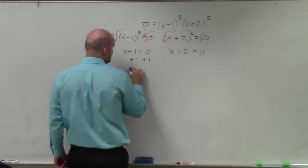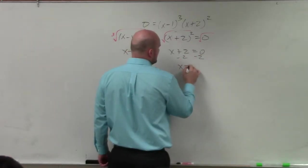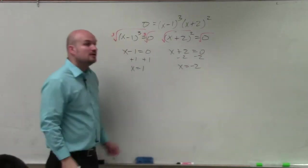Now I just add 1, add 1, so x equals 1. Subtract 2, subtract 2, so x equals negative 2. Those are my zeros.